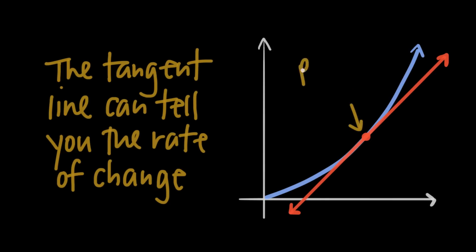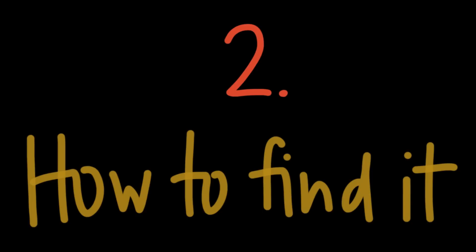Anyway, the tangent line is super helpful, because it can tell you the rate of change of a curve at a specific point on its graph, as long as you know the equation of the tangent line. You can find this equation a couple of different ways, depending on the information you've been given.